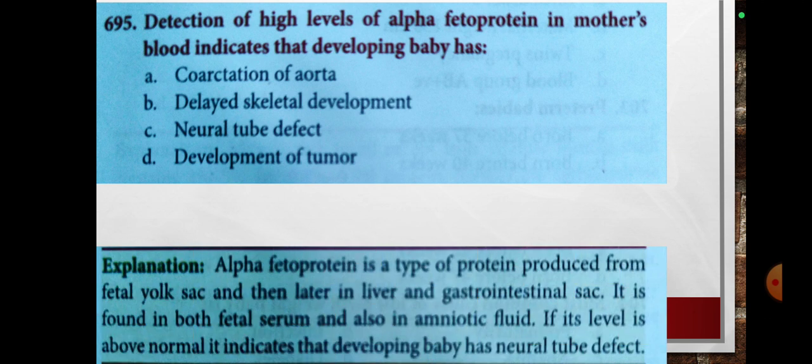The answer is neural tube defect. Alpha-fetoprotein is a type of protein produced from the fetal yolk sac and then later in the liver and gastrointestinal tract. It is found in both fetal serum and also in amniotic fluid. If its level is above normal, it indicates that the developing baby has a neural tube defect.